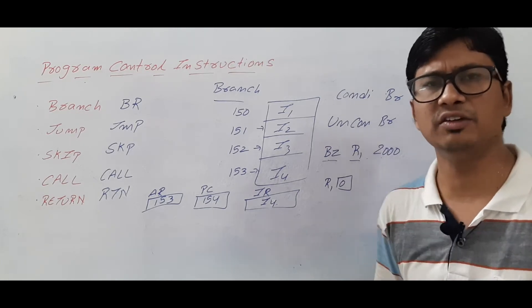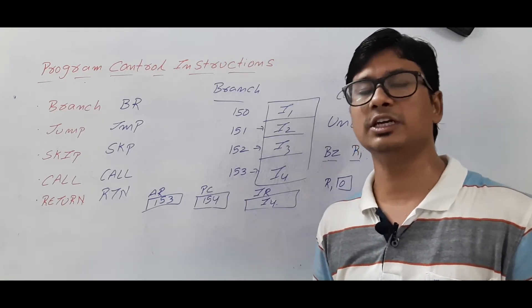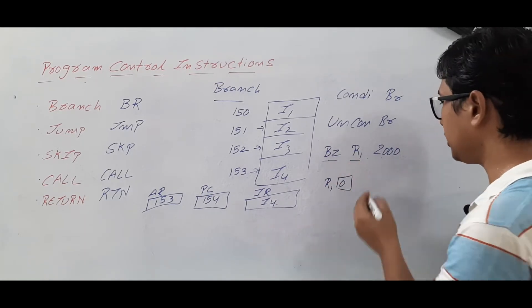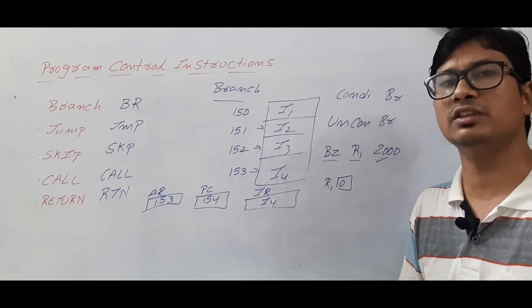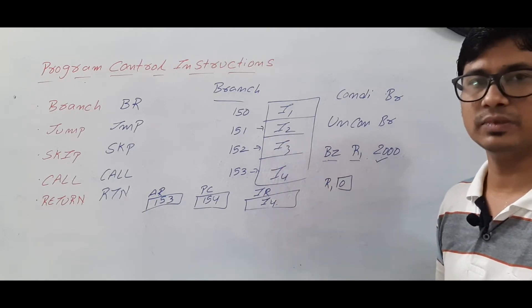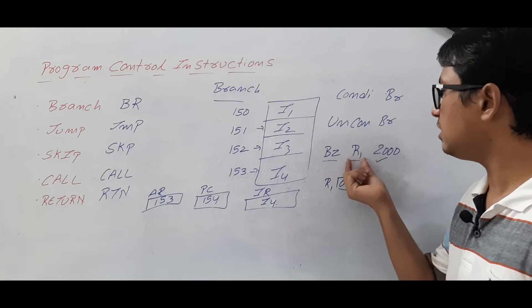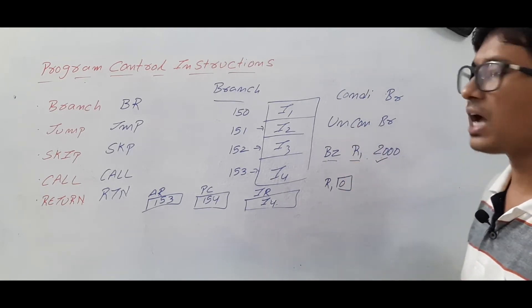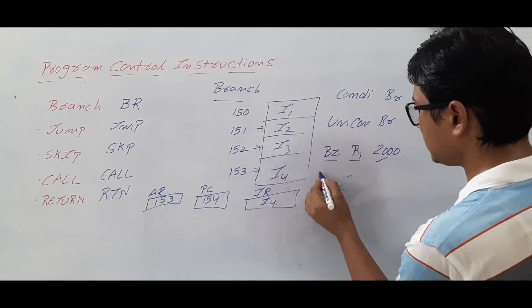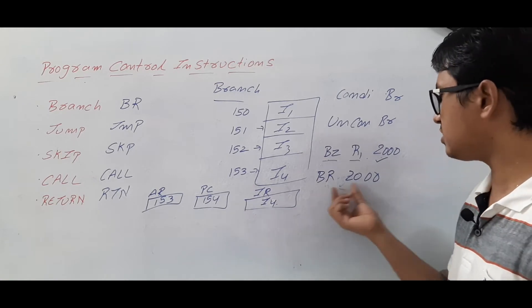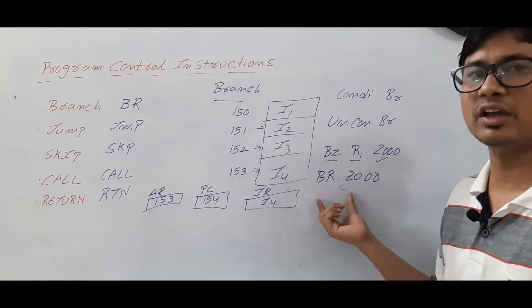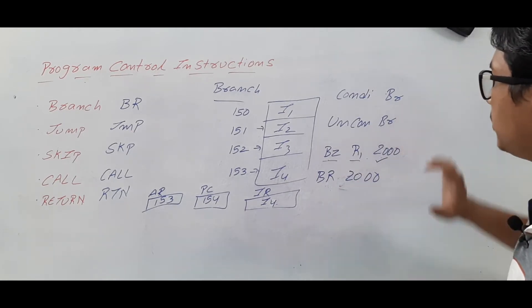It is similar to an if condition — if the condition is true, some statements will be executed; else, other statements will be executed. Similarly, if register R1 consists of value 0, the next instruction executed will be the one at address location 2000. If R1 consists of a value other than 0, it will execute the next sequential instruction, meaning the branch condition has failed. Whereas in an unconditional branch, there are no conditions — like 'branch 2000' — it will always execute the instruction at location 2000 as the next instruction.